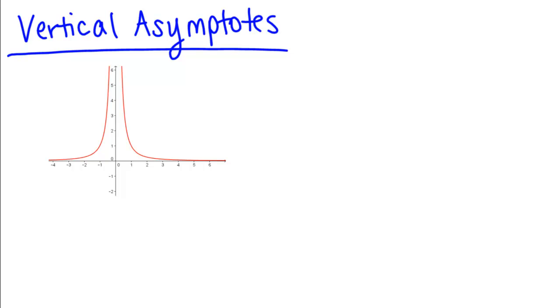You may remember vertical asymptotes from the previous course. A vertical asymptote is graphically a dotted vertical line that the graph cannot cross and it approaches instead.